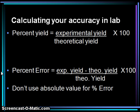An analogy: percent yield is like the percent correct you score on a quiz or test; percent error is like the percent wrong you got. Please do not use absolute value for calculating percent error — some websites and books show it this way, but in chemistry we want to calculate either negative or positive percent errors. A negative percent error means our experimental value is lower than the theoretical; a positive percent error means our experimental value is over the theoretical yield.